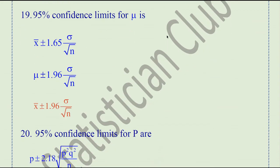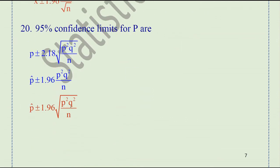Question number 19. The 95 percent confidence limit for mu is x-bar plus or minus 1.96 times sigma over root n. The 95 percent confidence limit for proportion is p-hat plus or minus 1.96 times the square root of pq over n. This is the limit in the case of a two-tail test, because we have 0.05 level of significance and in a two-tail test its z-value is 1.96.